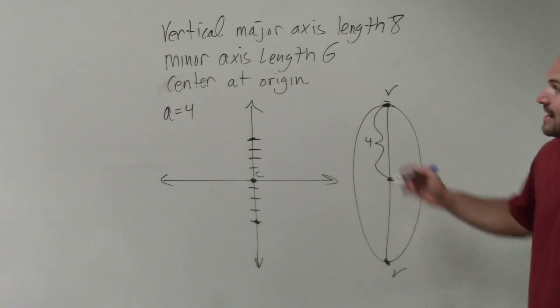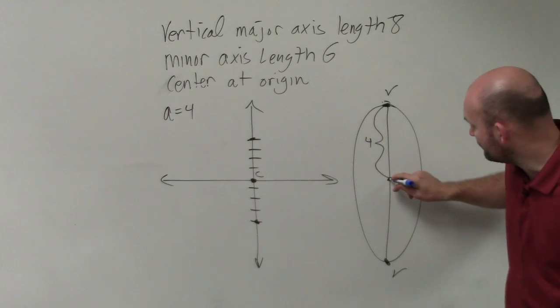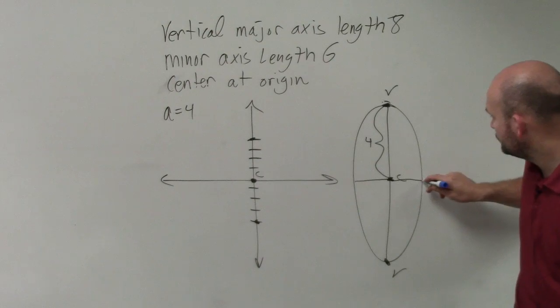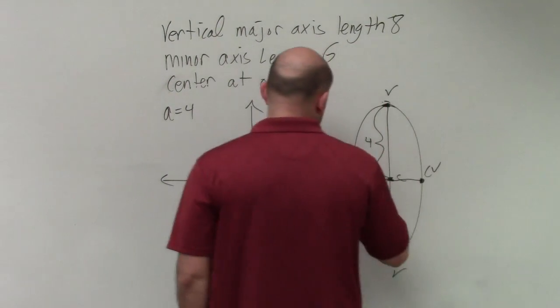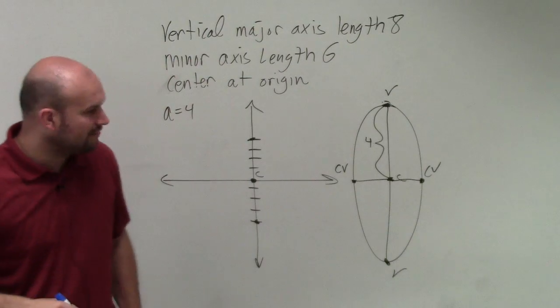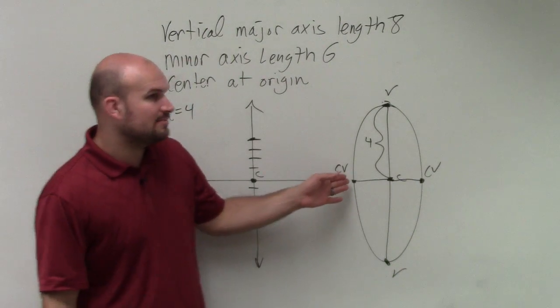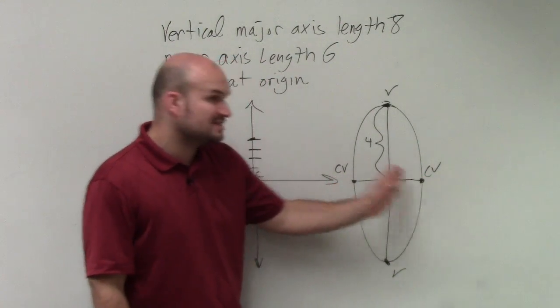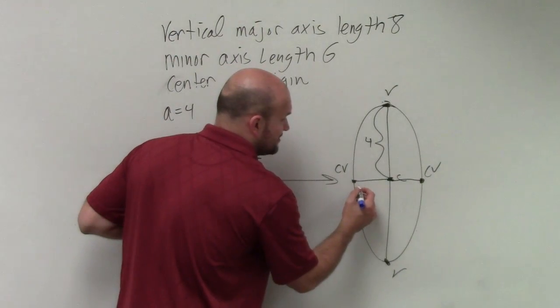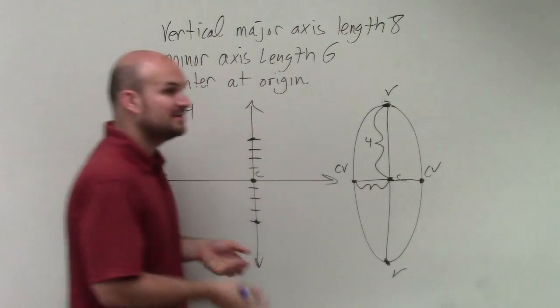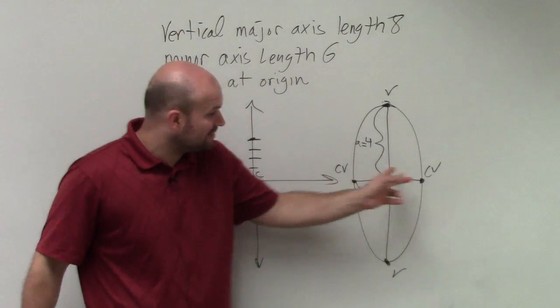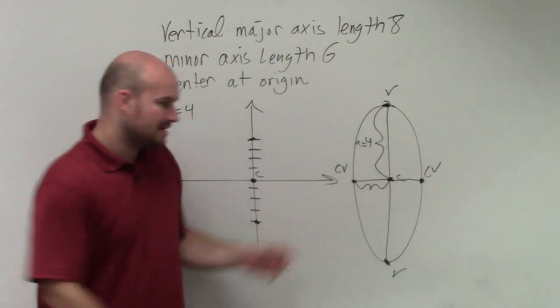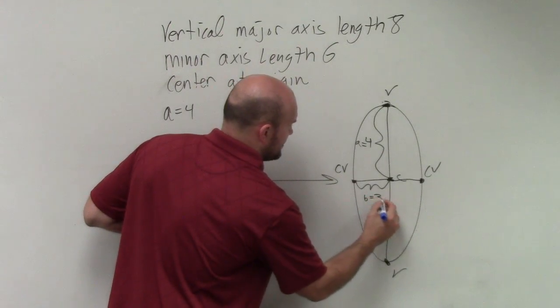Now the next thing is the minor axis. The minor axis length is from covertice to covertice. So plotting the information would be very helpful. So now, if I know covertice to covertice is 6, but all I care about is from here to here, because that's the value of b, right? So if from here to here is 6, what is the length from here to here? 3. b equals 3.